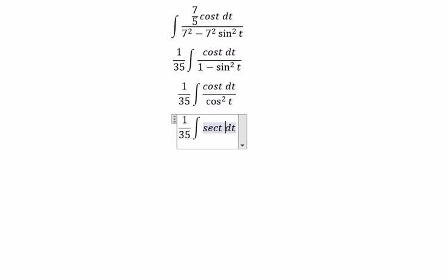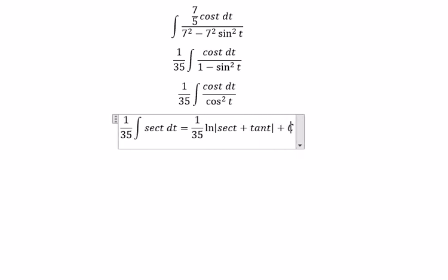We got about 1/35 multiply with ln of the absolute value of sec t plus tan t, and we have C, the constant.